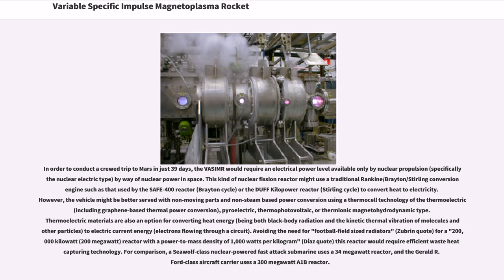Thermoelectric materials are also an option for converting heat energy to electric current energy. Avoiding the need for football field-sized radiators, a 200,000 kilowatt reactor with a power to mass density of 1,000 watts per kilogram would require efficient waste heat capturing technology. For comparison, a Sea Wolf class nuclear powered fast attack submarine uses a 34 megawatt reactor, and the Gerald R. Ford class aircraft carrier uses a 300 megawatt A1B reactor.